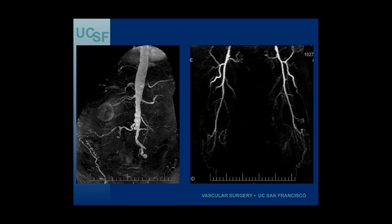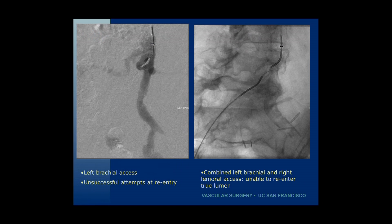Here's another case — an obese woman with lots of medical comorbidities and a colostomy. She has bilateral iliac artery occlusions: a right common iliac and a left external iliac occlusion, and also bilateral SFA occlusions. She was referred to us after an unsuccessful attempt at recanalizing the iliac arteries through a femoral approach. This was attempted through left brachial access, but we could not cross the lesion, so a combined left brachial and right femoral access was tried.